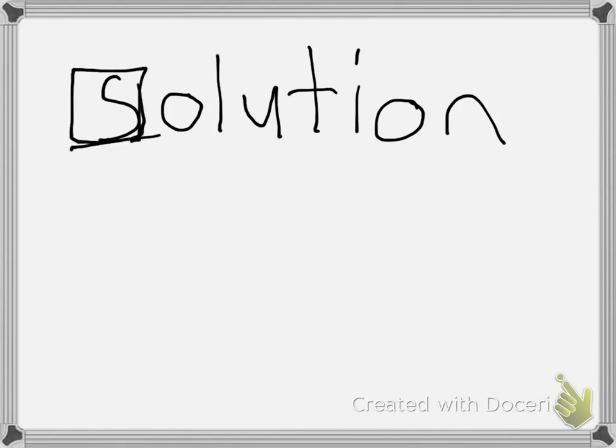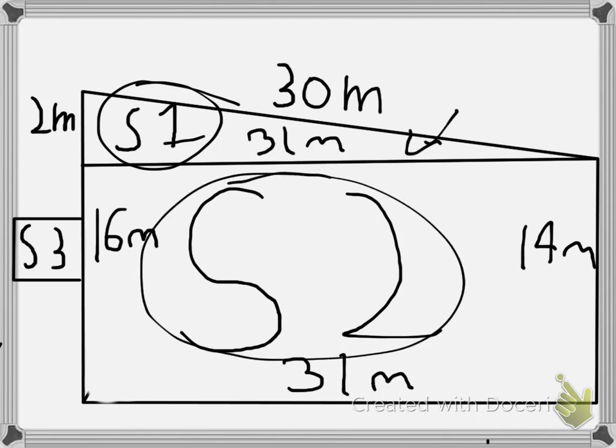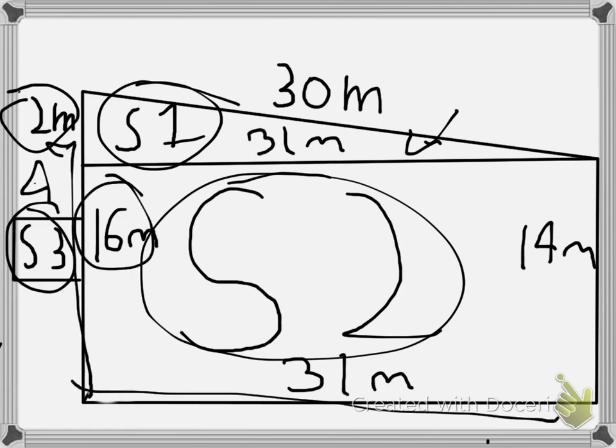Step 1: In order to divide the shapes, we divided the property into three parts. Shape 1 is a triangle, shape 2 is a rectangle, and shape 3 is a square. We also have all the lengths here. For example, this part is 2 meters, this part is 16 meters, 31, and 14. Small mistake - this part over here is actually 14, not 16.